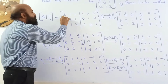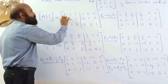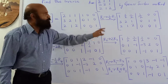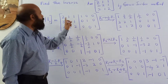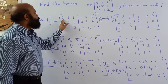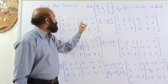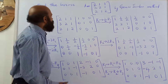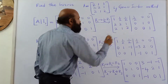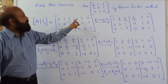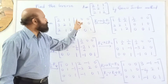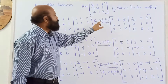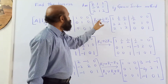To make the (1,1) element equal to 1, multiply all elements of the first row by 1/2: 2 × (1/2) = 1, and the other entries become 1/2 and 1/2. The second and third rows remain unchanged. Apply the same transformation to the identity matrix side: row 1 becomes [1/2, 0, 0], while rows 2 and 3 are unchanged.